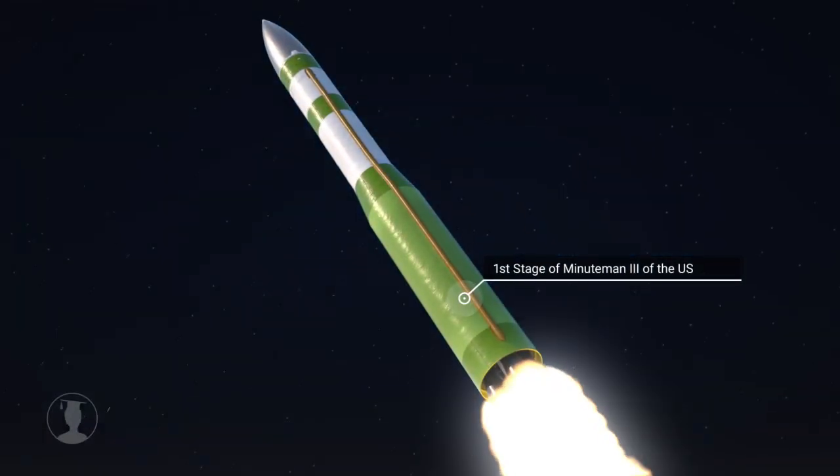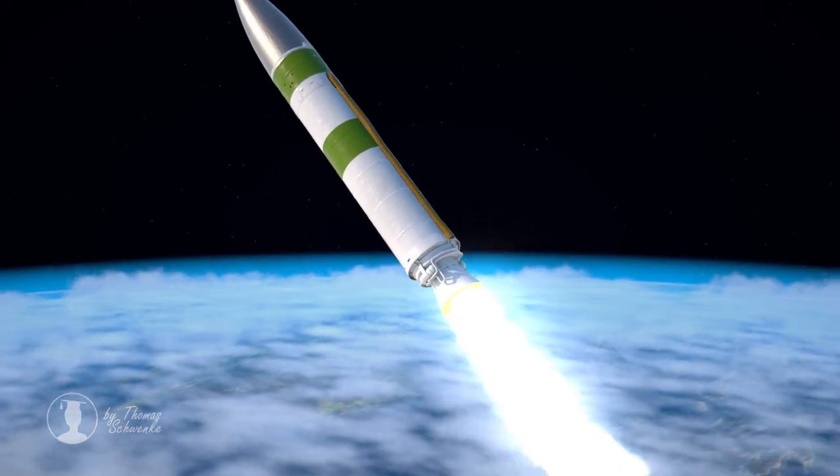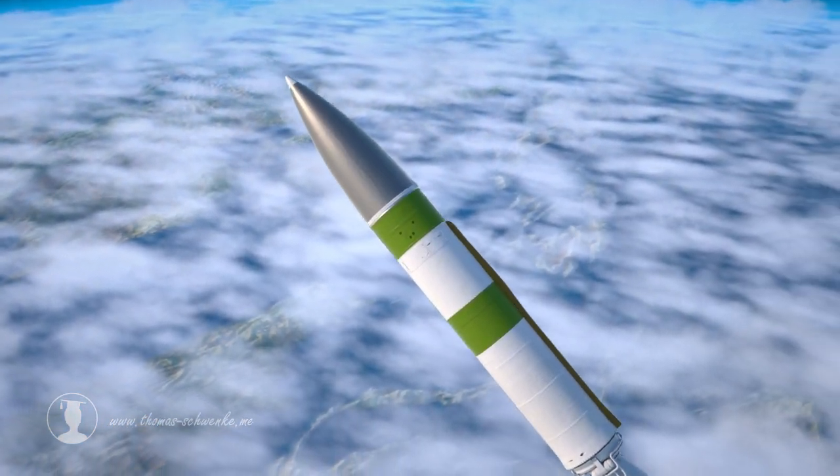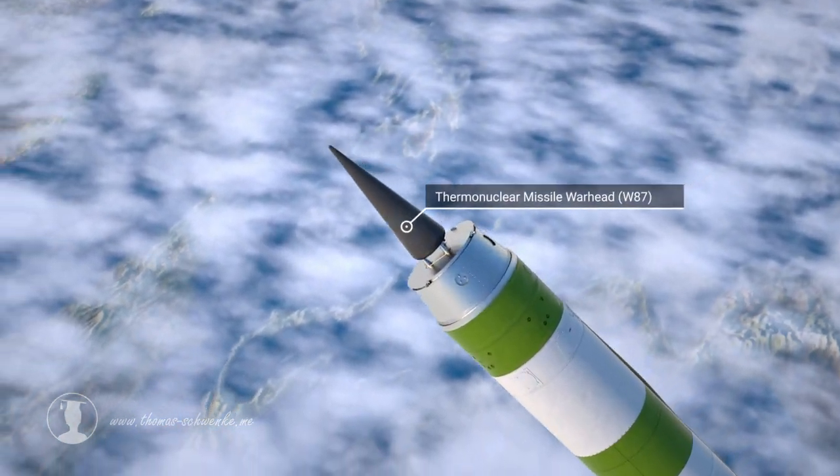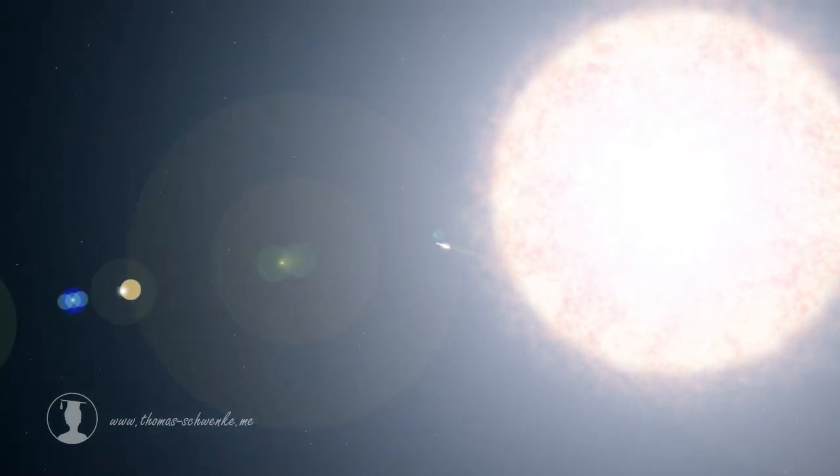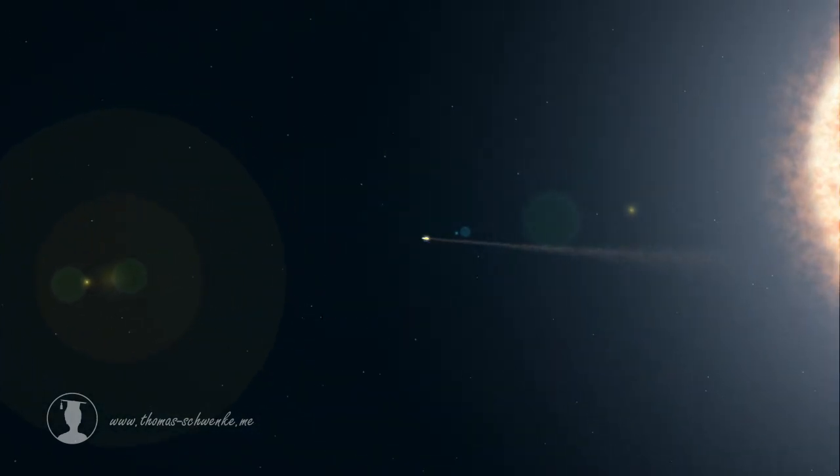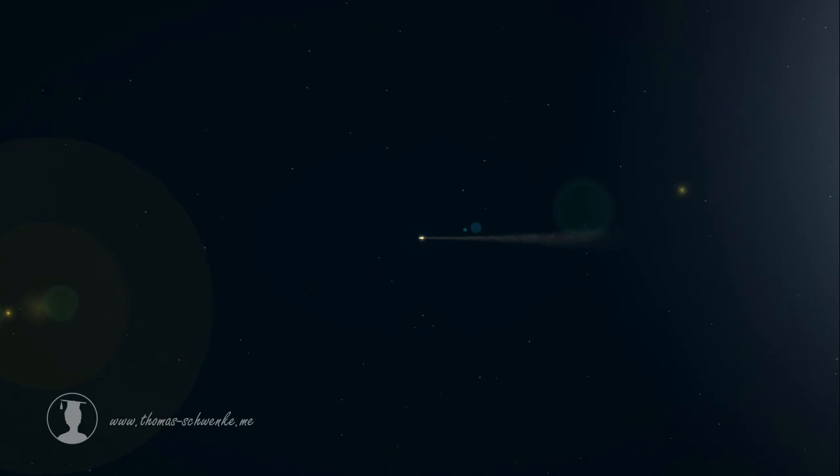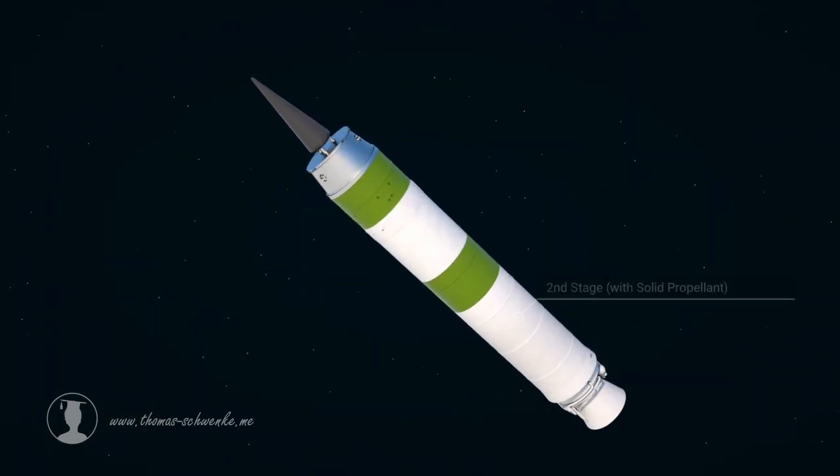The Minuteman III is a multistage missile that separates its first stage after about one minute. Shortly thereafter, the shroud is jettisoned. The rocket continues to gain altitude and speed with the help of the second stage. After about two minutes of flight, the second stage is separated.